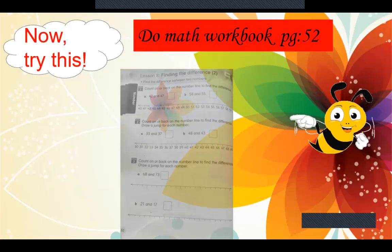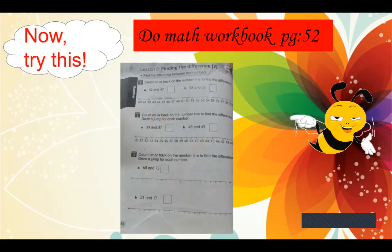Now it's homework time. You have to do Math Workbook page 52. Challenge 1 is count on or back on the number line to find the difference. And challenge 2 is count on or back on the number line to find the difference. You can draw a jump for each number. Next, challenge 3 is count on or back on the number line to find the difference. You can draw a jump for each number.